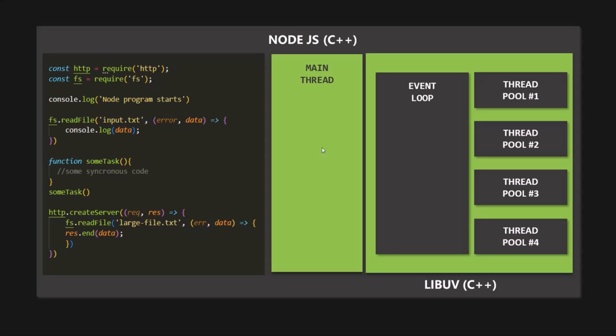The expensive tasks that can be offloaded to the thread pool include operations like dealing with files, everything related to cryptography like hashing passwords, compression-related tasks, and DNS lookups — which match web domains to their corresponding real IP addresses. These are the things that would most commonly block the main thread, so Node takes care of automatically offloading these heavy tasks to the thread pool where they don't block the main single thread. And this is how Node.js works behind the scenes.